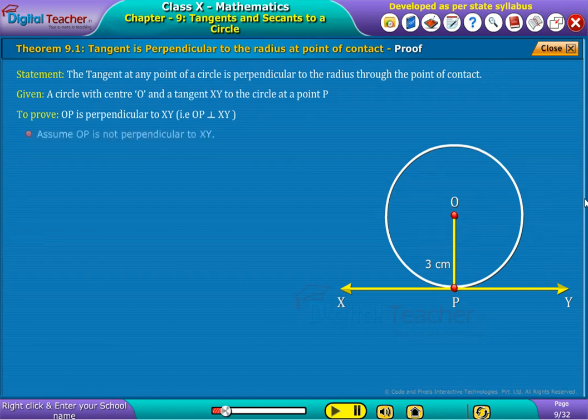Now, assuming the tangent is not perpendicular to the radius, that is OP is not perpendicular to XY.